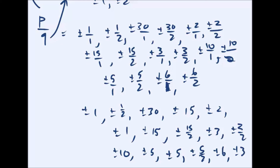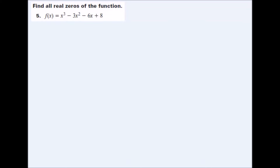The significance of this list is that these are all the places where the graph might cross the x-axis at a whole number or rational number — not a decimal or square root. The reason for doing all this is for questions like 'find all real zeros of the function.' Now that you know how to find the possible zeros, you can use that list to determine the actual real zeros. This is the only way to approach something you can't factor.